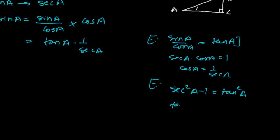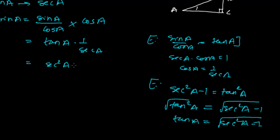that tan square A under root, sec square A minus 1 under root will give me the tan A equals to sec square A minus 1. It's minus 1, it's 1. So tan A is sec square A minus 1 but under root.